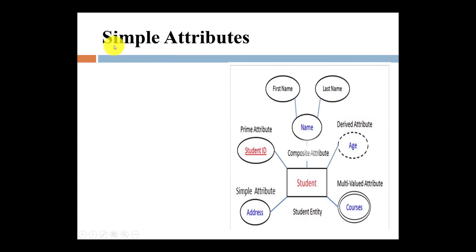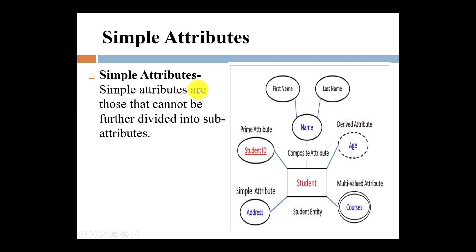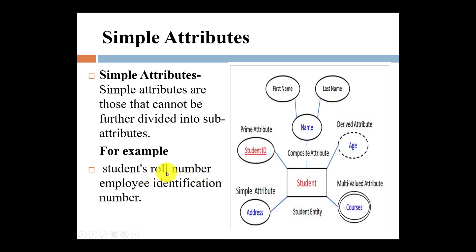First, what is a simple attribute? A simple attribute cannot be further divided into sub-attributes. For example, student ID is a simple attribute — we cannot divide it further. Similarly, a student roll number is unique and cannot be divided. An employee number is also a simple attribute that serves as the identification of an employee. Because simple attributes cannot be divided further, they are called simple attributes.